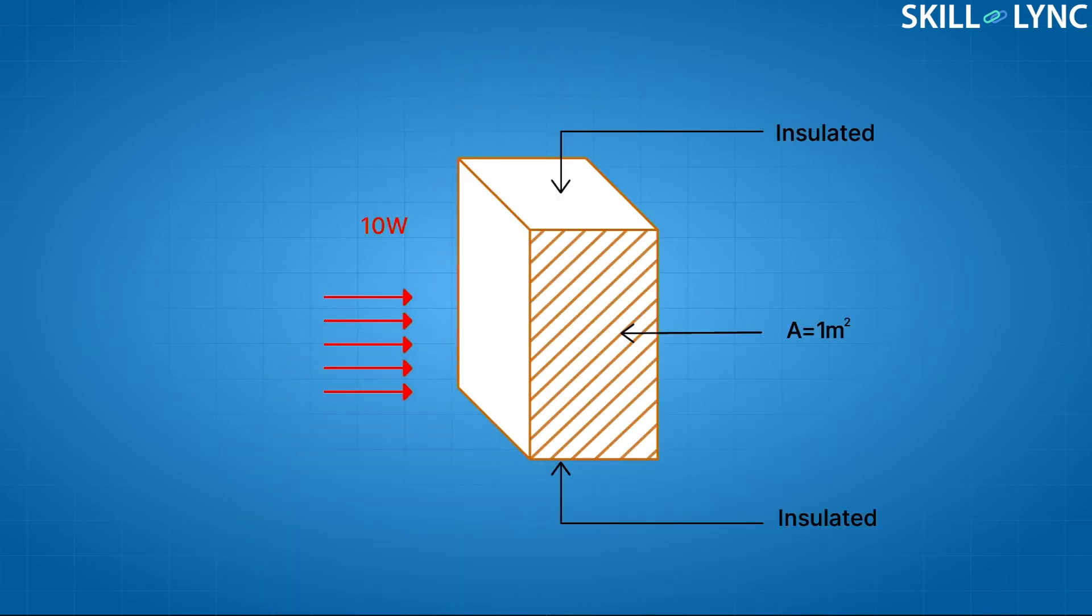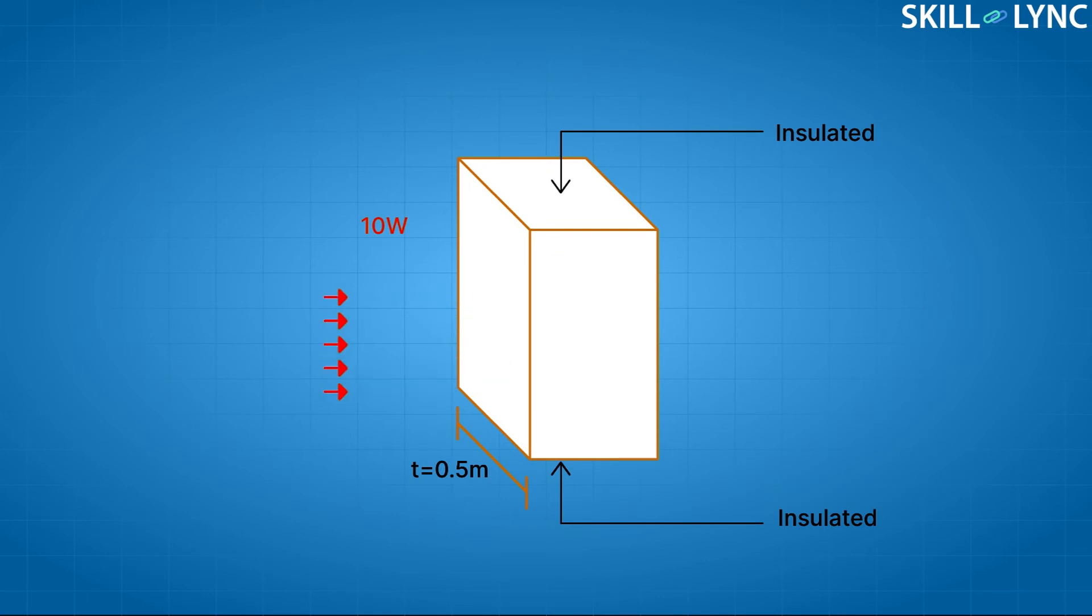The answer is quite simple. The area of the rectangle is, let us assume, 1 square meter, and its thickness is 0.5. Hence, the volume of this entire plate is 0.5 cubic meters.